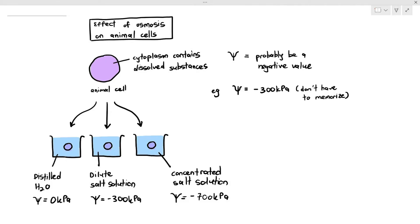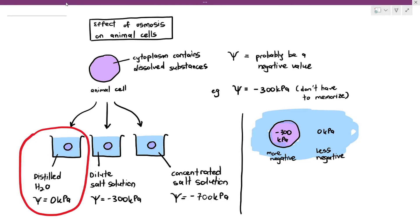Let's look at the first one. If I were to immerse the animal cell in distilled water, remember, the animal cell has a water potential of negative 300 kilopascals and the distilled water which is surrounding the cell has a water potential of 0 kilopascals. The first thing that you have to do is determine which area has a more negative water potential and less negative water potential. The cytoplasm's water potential is more negative and the distilled water has a less negative water potential.